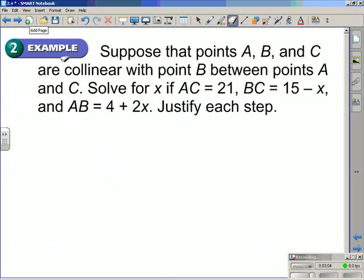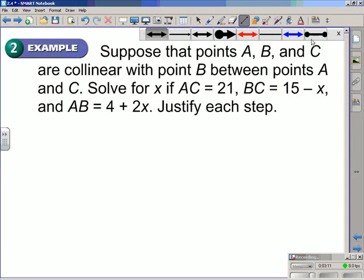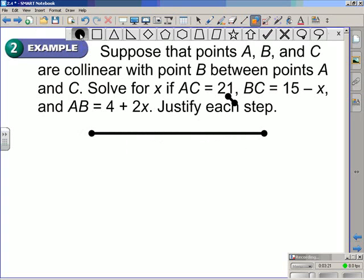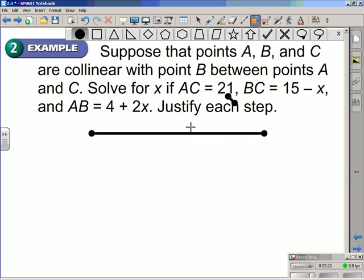Here in example 2, suppose that the points A, B, and C are collinear with point B between points A and C. Solve for x if AC is equal to 21 and BC is equal to 15 minus x and AB is equal to 4 plus 2x. Justify each step. Now what I'm doing here is drawing a diagram to help me set up and solve this problem. Then I will go through and write the proof for it.